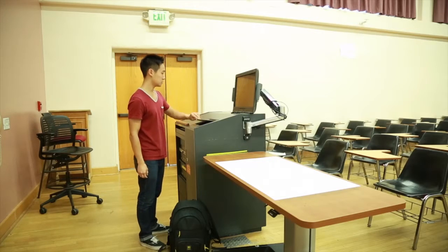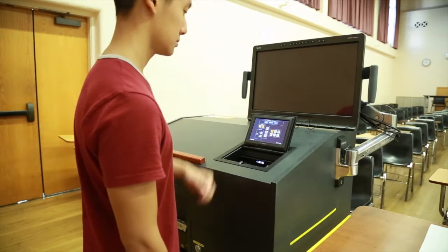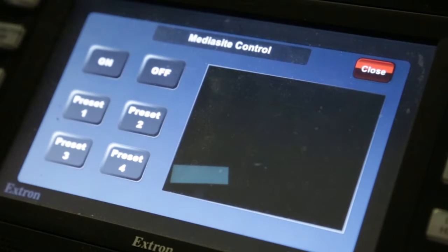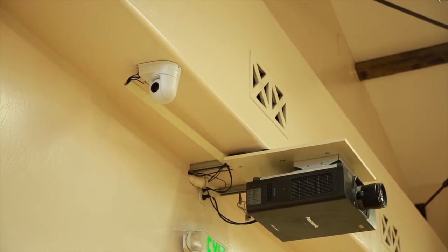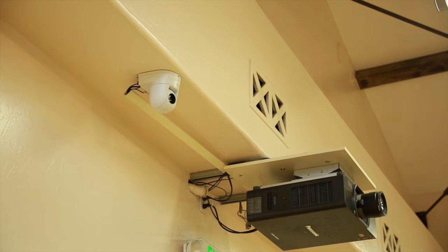Next, open the touch link panel. Click on the Mediasite button located on the home screen to access camera operations. Press the on button to turn the Mediasite camera on. You will see the camera move, indicating it's ready for use.